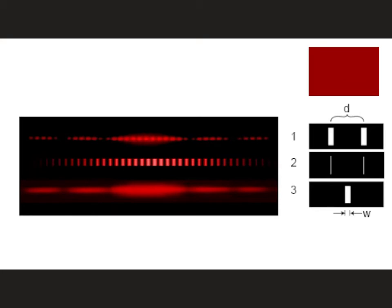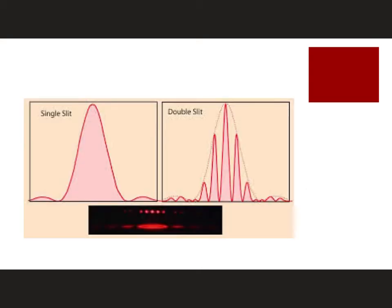So what that means is, we have our double-slit interference, but the fact that the slits have their own finite width means they are also adding to the total interference package.